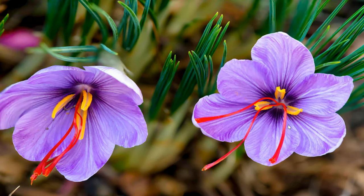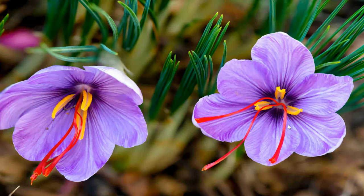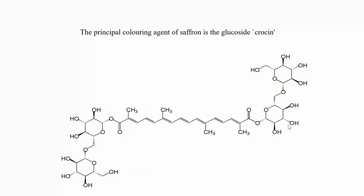Saffron of commerce is the dried trilobed stigmas of Crocus sativus, a bulbous perennial plant. Saffron is one of the oldest and world's most expensive spices. The word saffron originated from the Arabic word 'zaffron', which comes from the Persian word 'zapparan', meaning flowers of golden petals. The principal coloring agent is the glucoside crocin, and the bitter substance is the glucoside picrocrocin, besides which crocetin and safranal are the other main constituents.